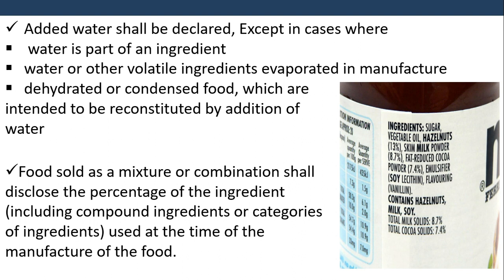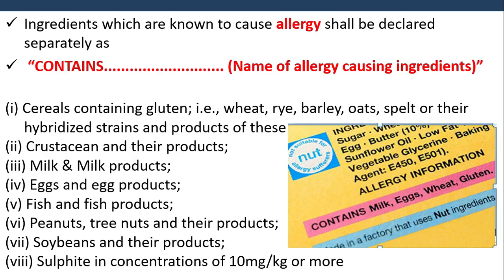Water or other volatile ingredients evaporated during manufacture need not be declared. For dehydrated or condensed foods intended to be reconstituted by addition of water, food presented as a mixture or combination shall disclose the percentage of the ingredient used at the time of manufacture. Ingredients known to cause allergy shall be declared separately as 'Contains [name of allergen]', for example: cereals containing gluten, milk and milk products, and sulphites in concentrations of 10 mg per kg or more.